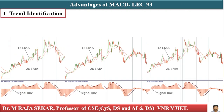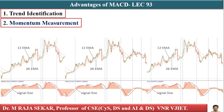The advantages of MACD: first, trend identification — it helps traders identify bullish and bearish trends by analyzing moving average crossovers. Positive MACD values indicate an uptrend, while negative values suggest a downtrend. Second, momentum measurement — it shows the strength of a trend based on the distance between the MACD line and the signal line. A widening gap signals strong momentum, while a narrowing gap suggests weakening momentum.